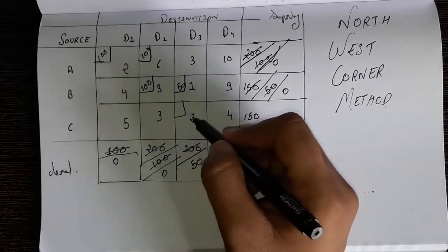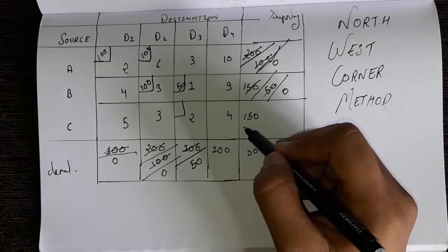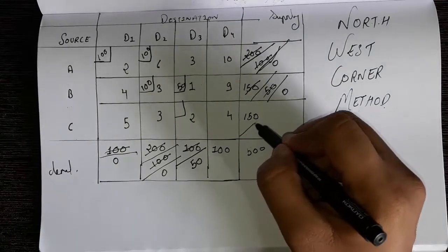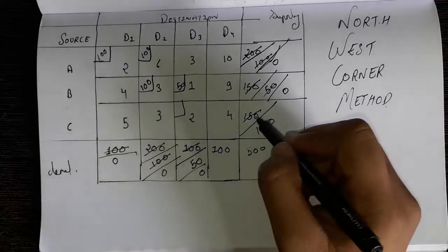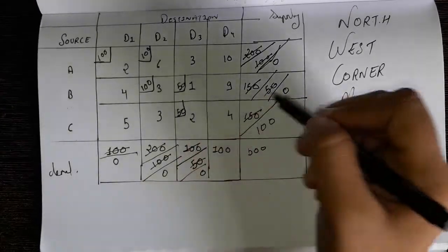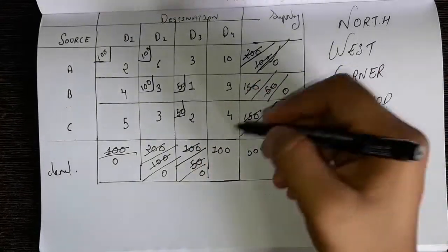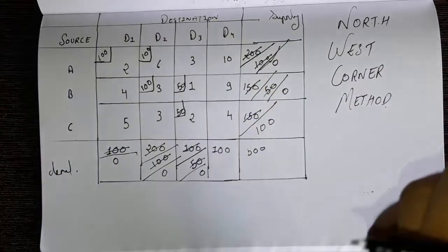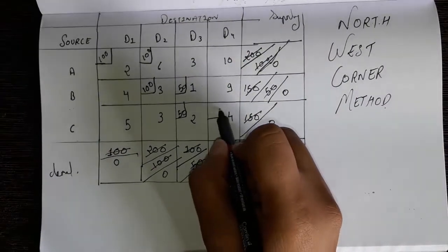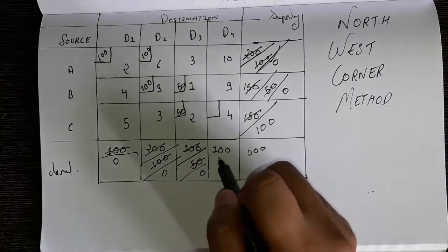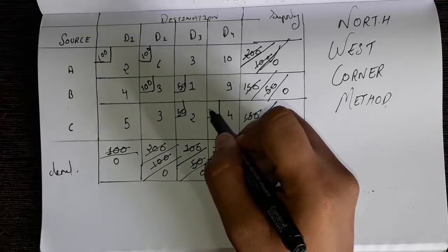Now we have to see the supply and demand of this corner. Here 50 is remaining and the 150 is remaining here. 150 minus 50: this 150 will become 100 and this 50 will become 0. Write the remaining 50 here. Now this became 0 and there is no place to go down, we have to go to the right side. To check the answer, the last value will always become 0 — there is 100 and 100 here, so 100 minus 100 equals 0 on both sides, and you write it here.